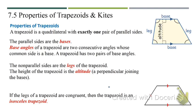A trapezoid is a quadrilateral with exactly one pair of parallel sides. The parallel sides are the bases. The base angles of a trapezoid are two consecutive angles whose common side is a base. A trapezoid has two pairs of base angles.